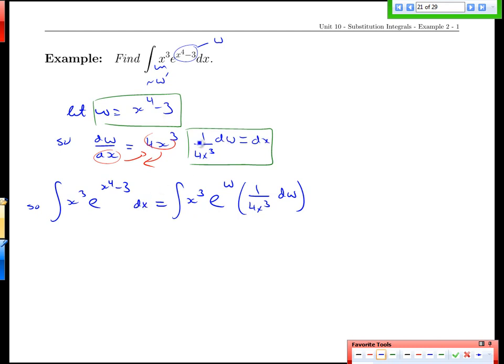That entire dx term turns into the more complicated fraction there, but the beautiful thing about that fraction is that the x cubed cancel. And so we get 1 over 4, the integral of e to the w, dw.